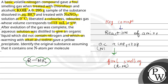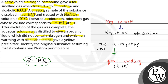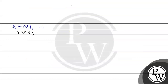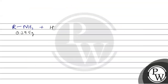We are considering RNH₂ as our compound. We have taken 0.295 grams of the sample. We are reacting this sample with aqueous HCl and then treating with NaNO₂, or directly we can write it as a reaction with HNO₂. So from this reaction, we get an alcohol, plus nitrogen gas is evolved, plus water.